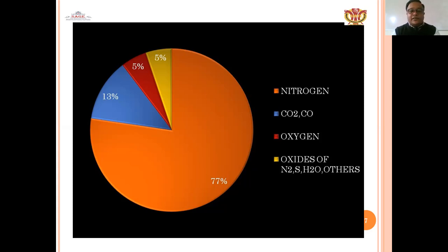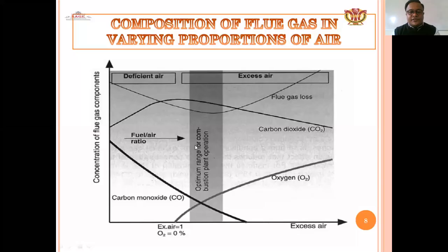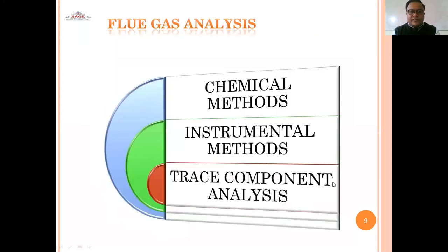Approximately 13% are carbon dioxide and carbon monoxide. The composition of flue gas varies with the proportions of air — deficient air or excess air. If the air is very less compared to fuel, that is a rich mixture; if excess air is present compared to fuel, that is a lean mixture. According to load conditions, the mixture can be supplied by the carburetor. Graphs show fuel-air ratio describing carbon dioxide, oxygen percentage, carbon monoxide, and excess air.